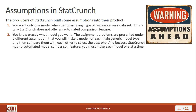The second assumption is that you know exactly what model you want to make. The assignment problems are presented under a different assumption — that you're going to make a model for each generic type and then compare those to see which is the best one. Well, StatCrunch doesn't have an automated model comparison feature, so you'd end up making models one at a time if you do it the way the author suggests. If you do it the way I suggest, I'm going to give you a simpler way to get around it.